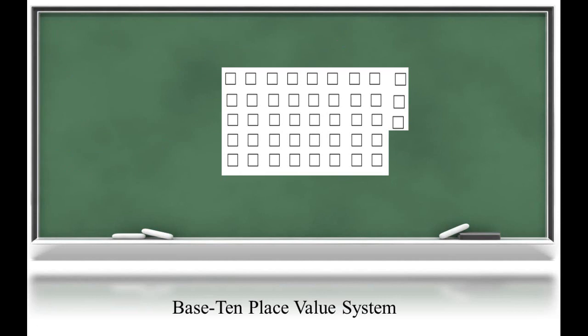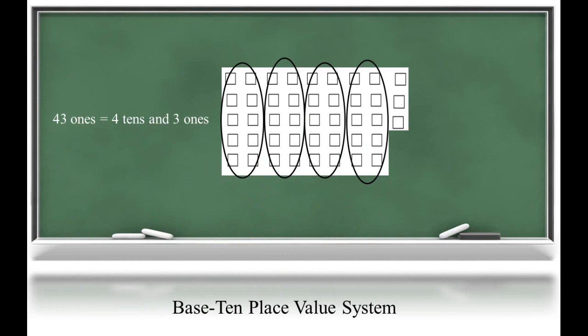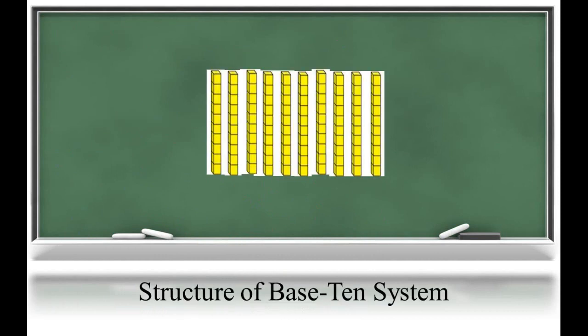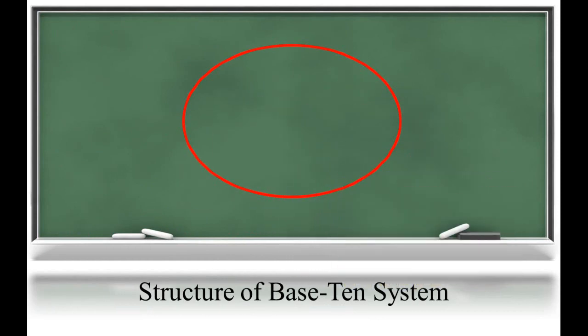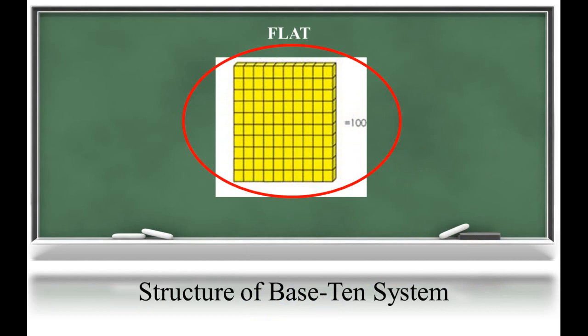You may recall, in the last unit, the learning focused on the relationships between the ones and tens place. Students further their exploration of the structure of place value, discovering that a group of 10 tens is 100. The base 10 manipulative used to represent 100 is called a flat.